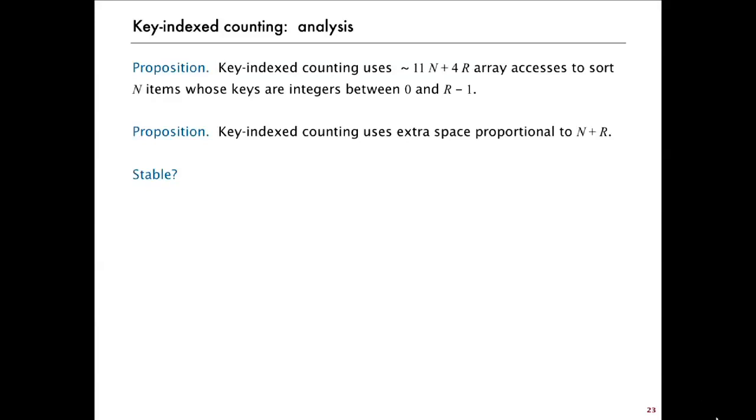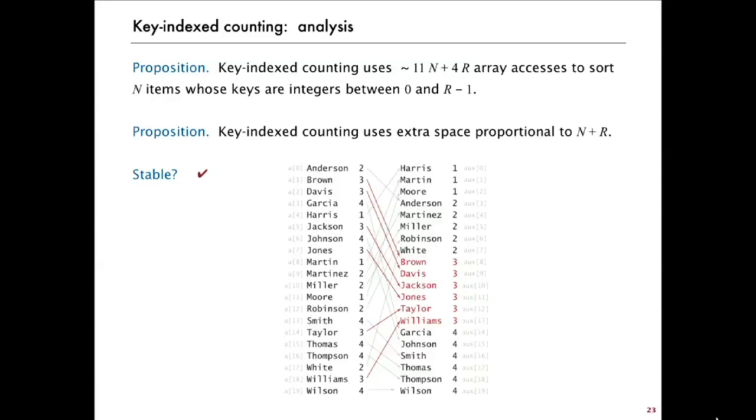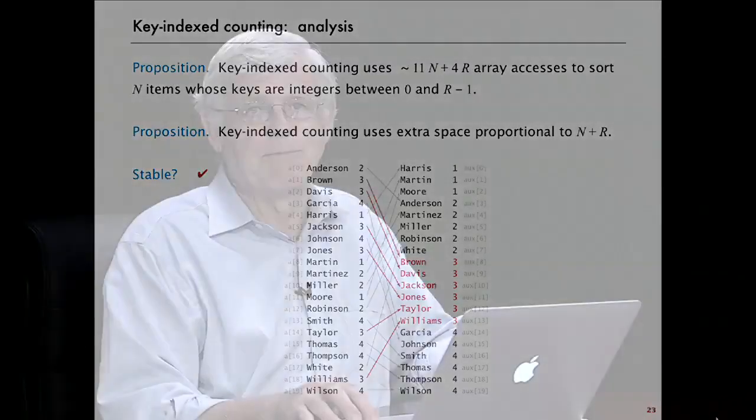There's also the question of, is it stable? Yeah, it's actually stable. Because when we do the move, we move things with equal keys in the order that we see them. We keep them in the order that we see them. That's just the way the method works. So we have a, for this special situation, we have a linear time stable sorting method which beats the n log n bound and is useful in many practical situations.